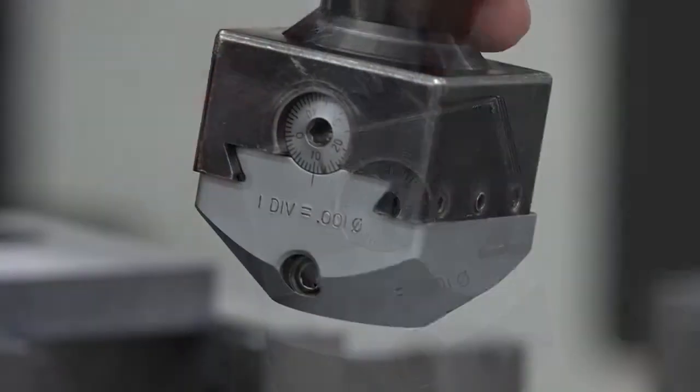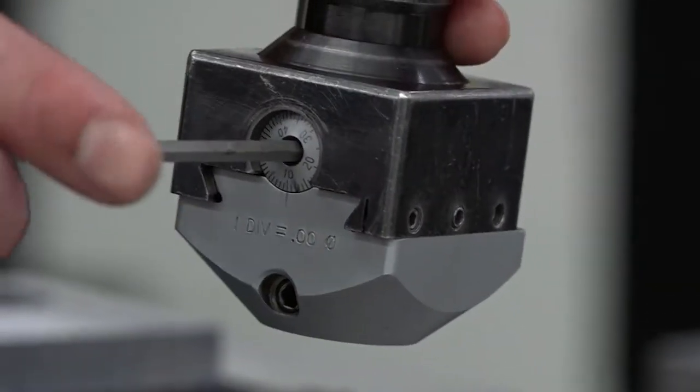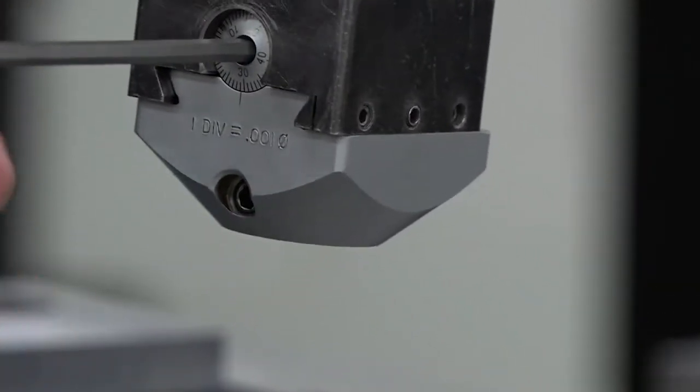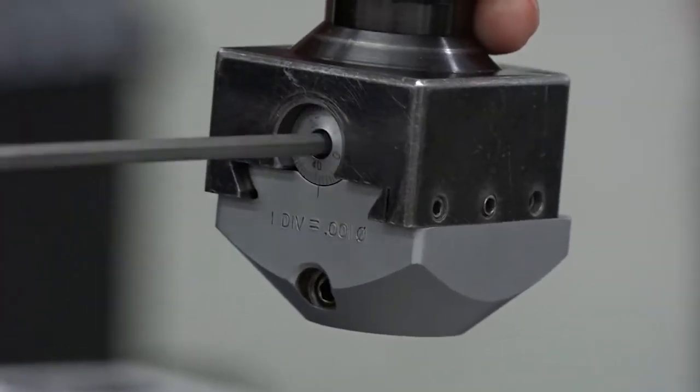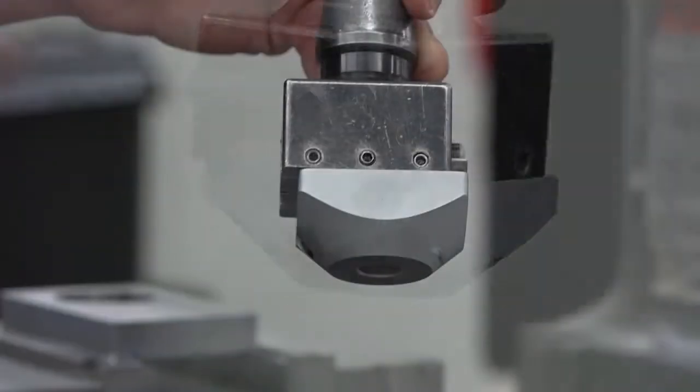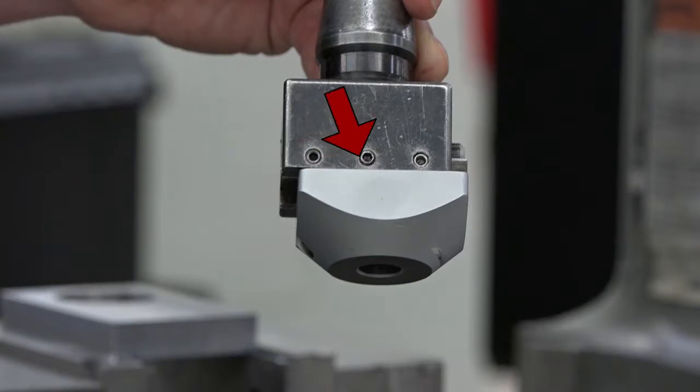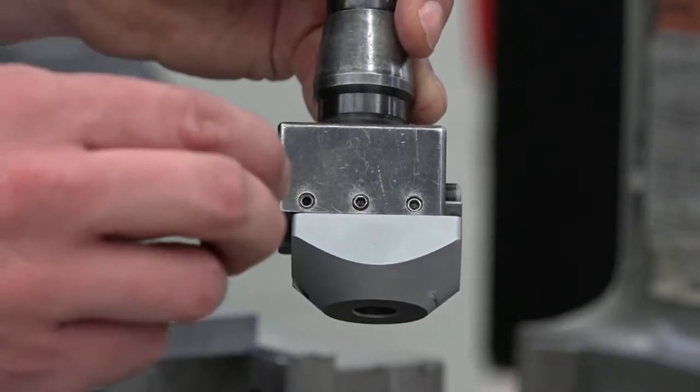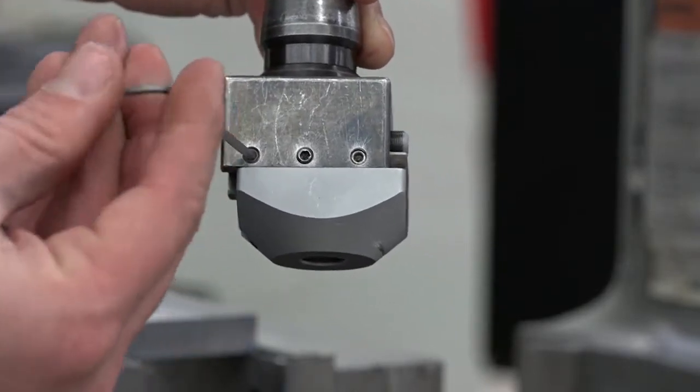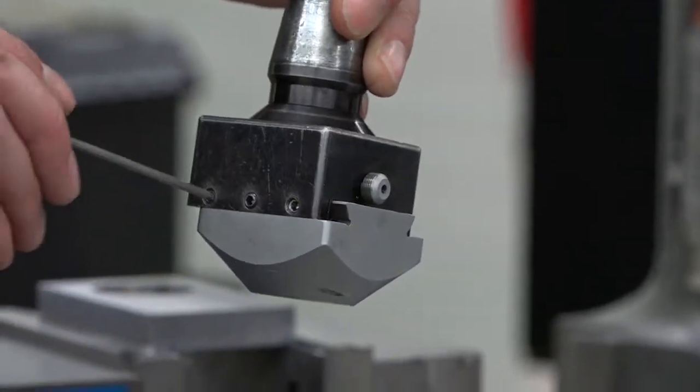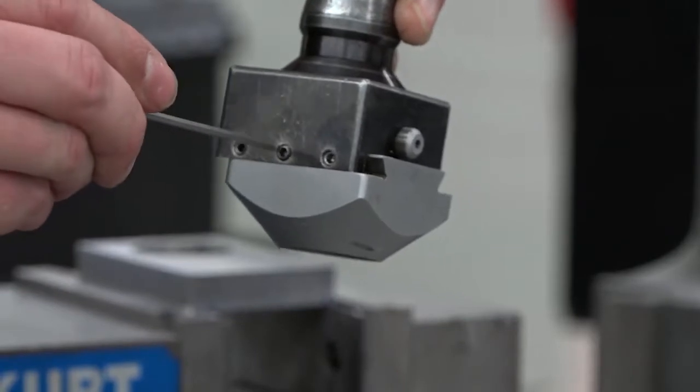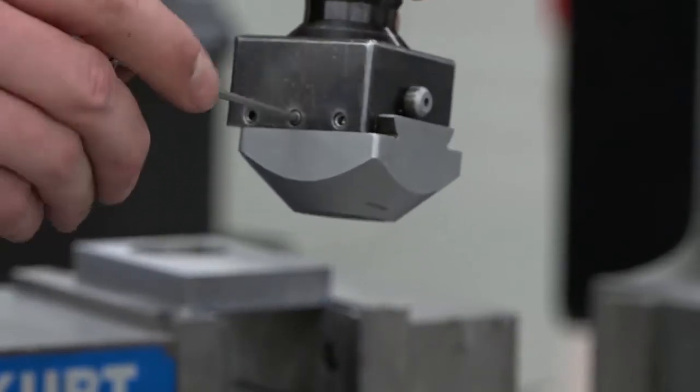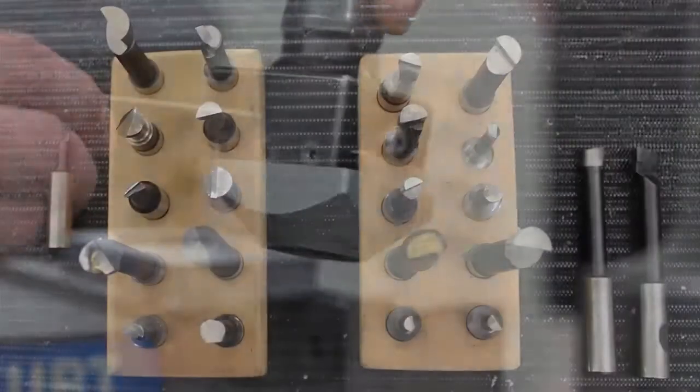An allen wrench is used to adjust the boring head. Always make sure you're using the correct size allen wrench to avoid stripping out the adjustment screw. The locking screw keeps the tool slide in the boring head from moving while you're cutting. Always make sure this screw is loose before adjusting the head, and always tighten the screw using an allen wrench after you've made your adjustment. Do not over tighten the screw.